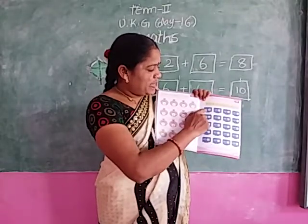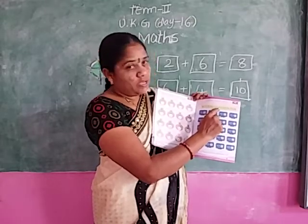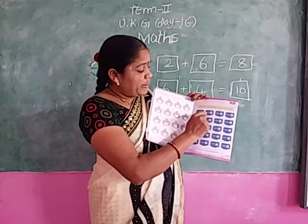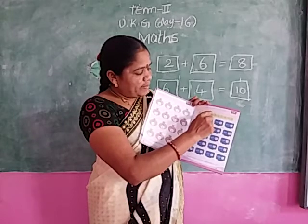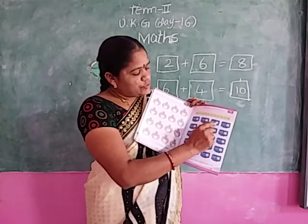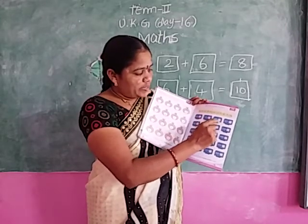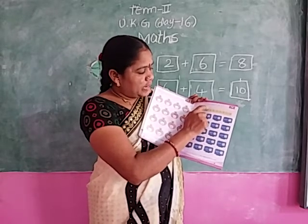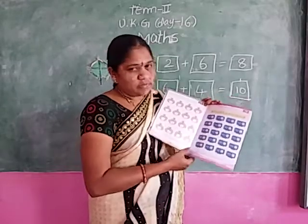Here also: 3 plus 2 — circle the 3 on the number line, move forward 2 times. Where are we? 5. Write the answer: 5. Next: 1 plus 3 — circle the 3 on the number line, move forward 1 time. What is the answer? 4. Next: 4 plus 2 — circle the 4, move forward 2 times. Answer: 6. Next: 3 plus 1 — circle the 3, move forward 1 time. What is the answer? 4. Do like this one.